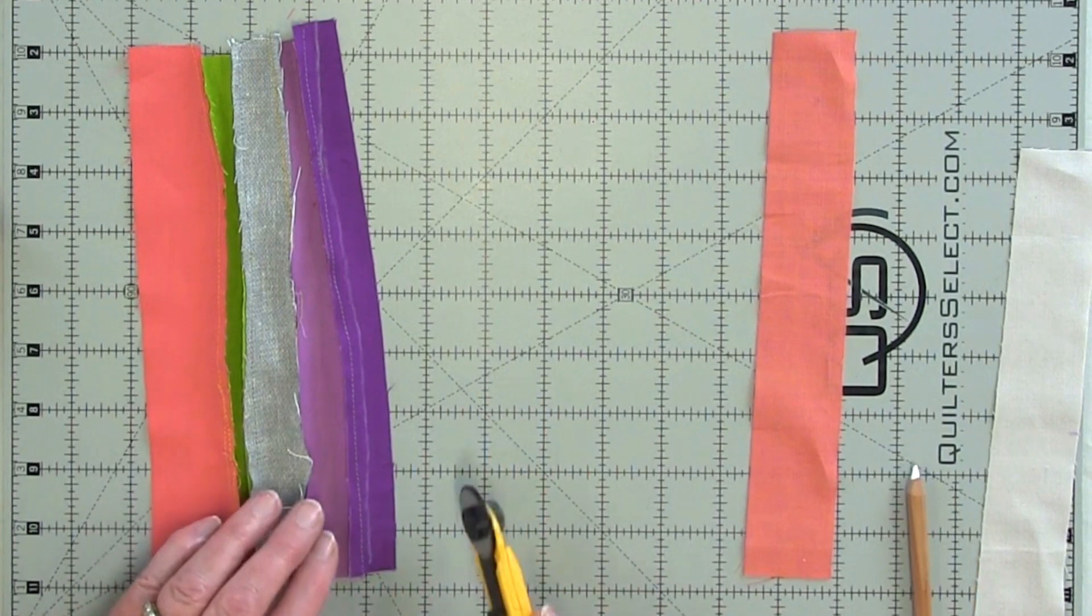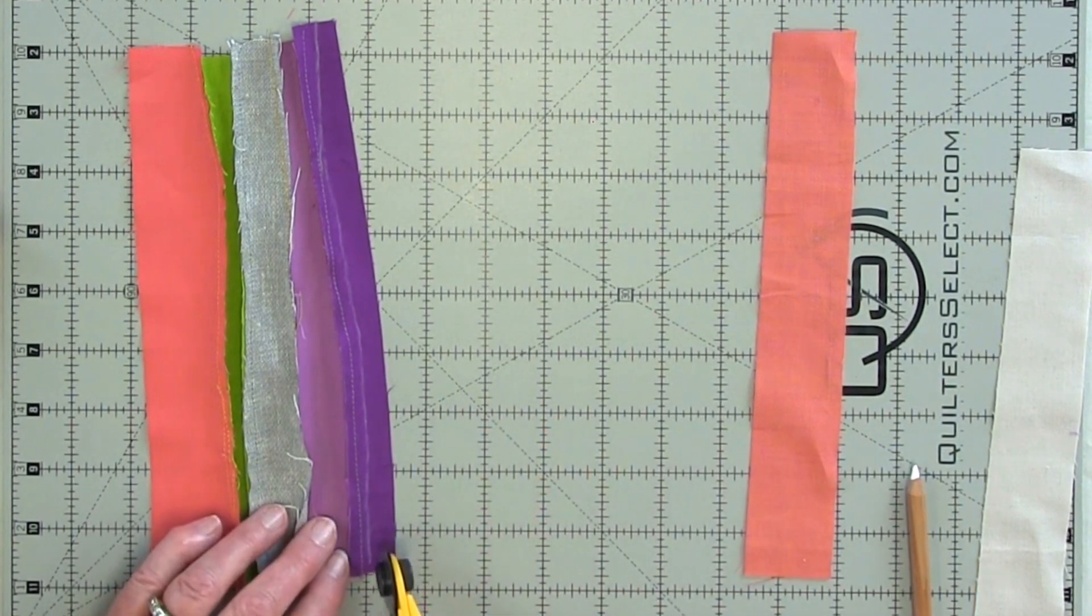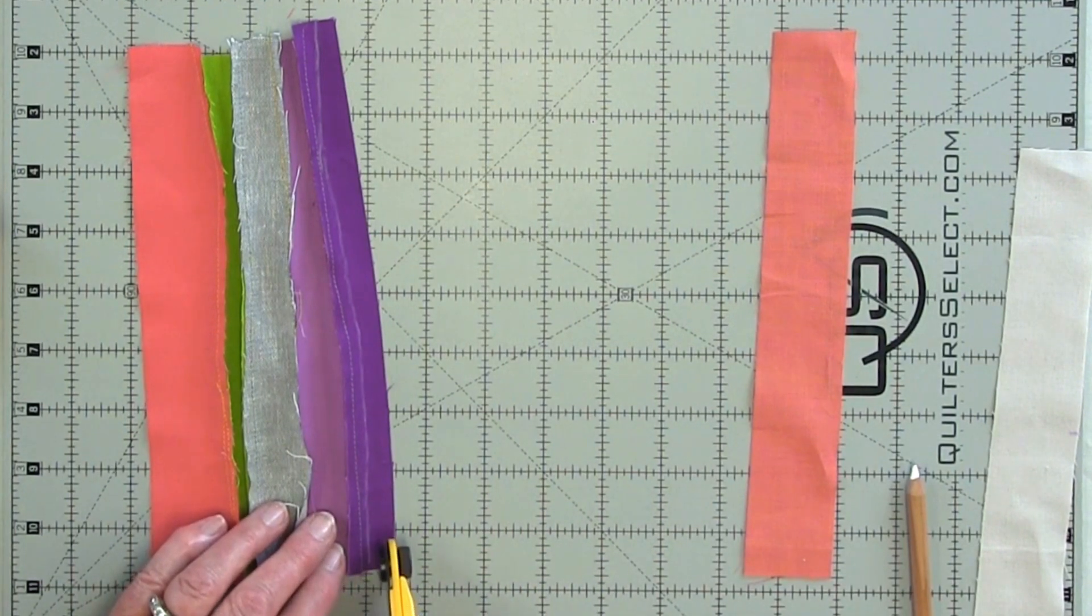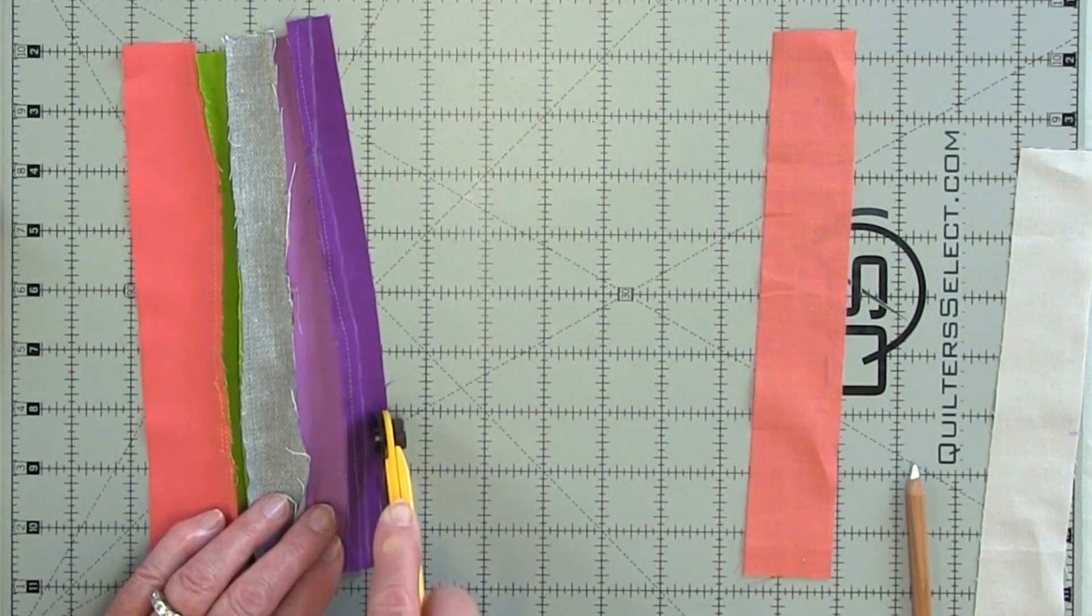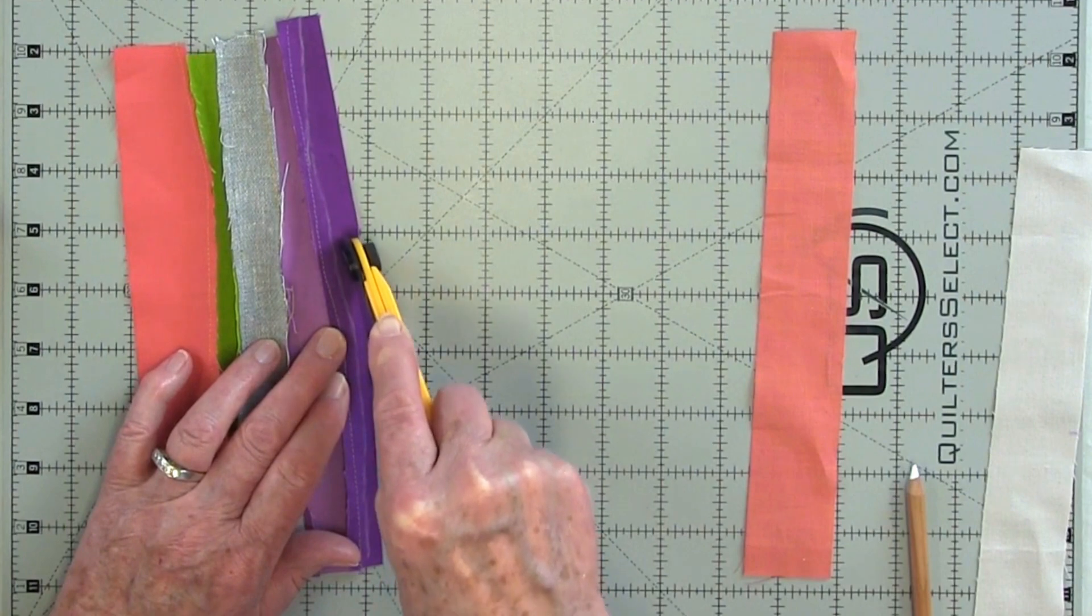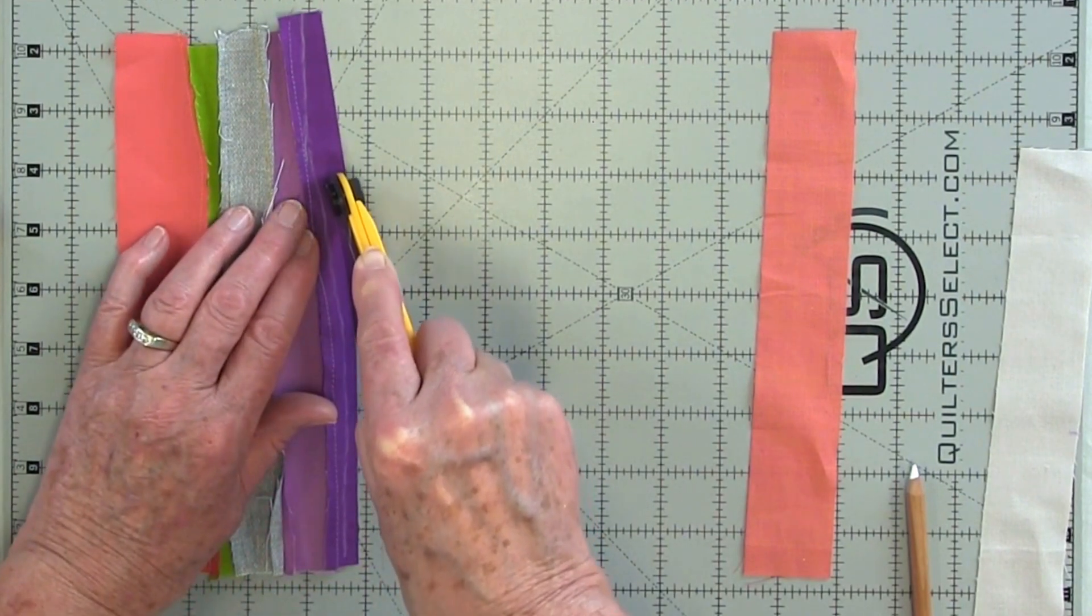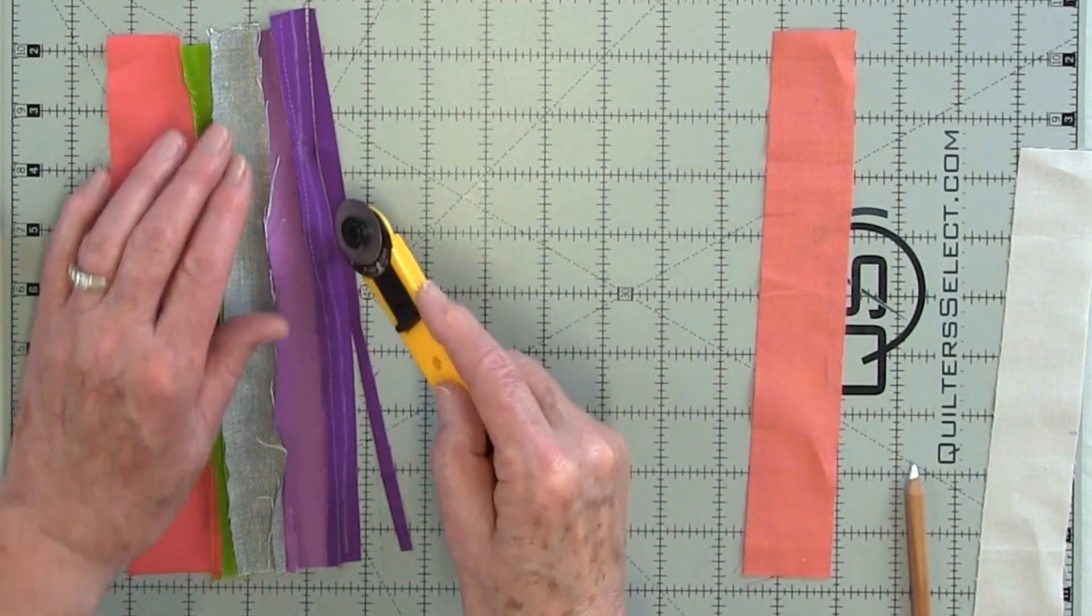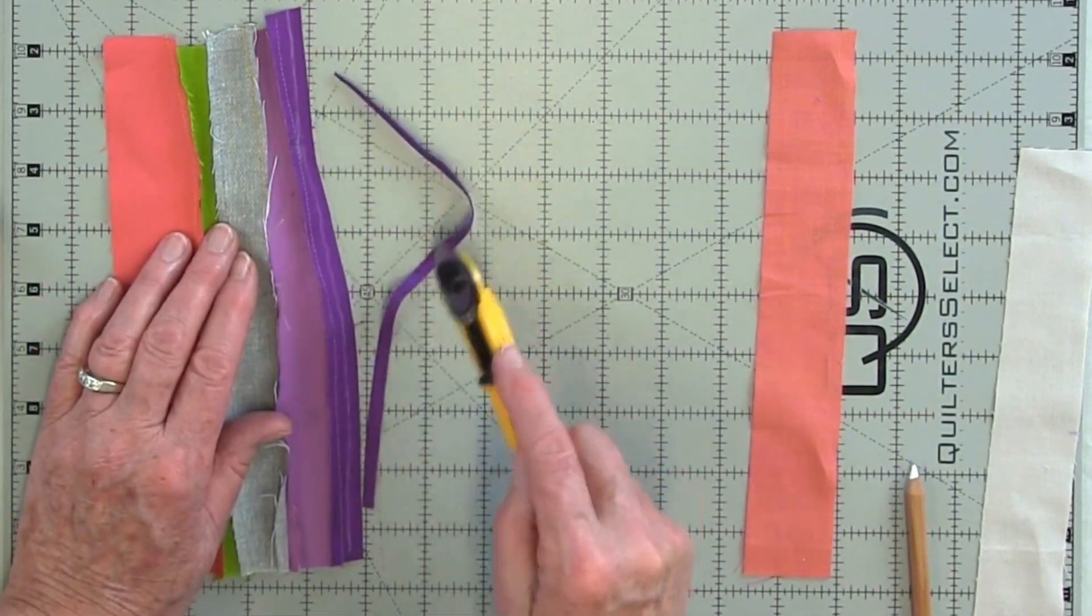Now you're going to take your rotary cutter and think about a quarter inch away from the pencil line. You're going to eyeball this. And what you're doing is leaving a quarter inch seam allowance. You can see what I took away here.